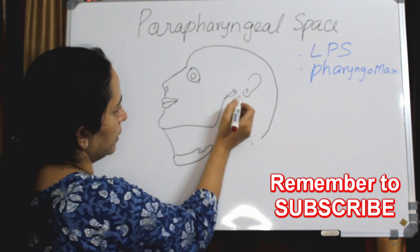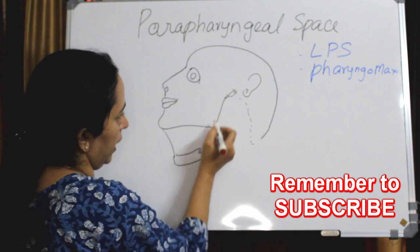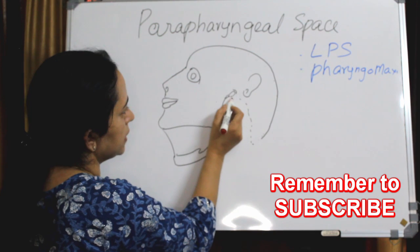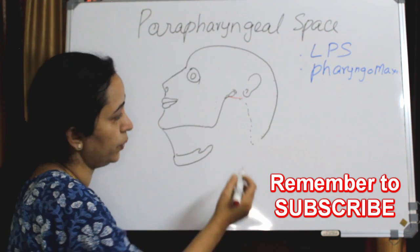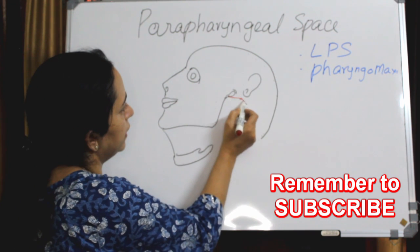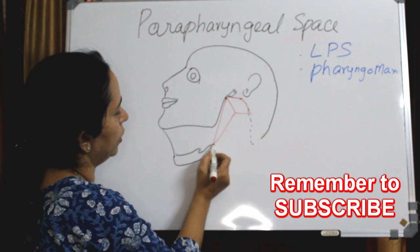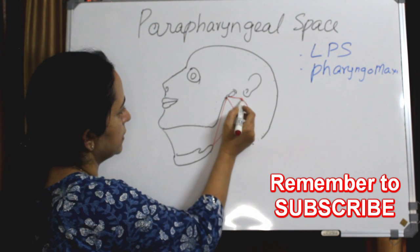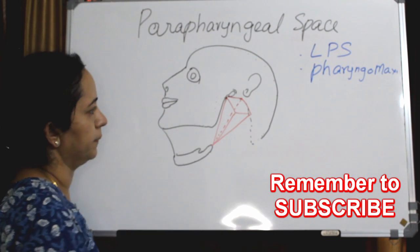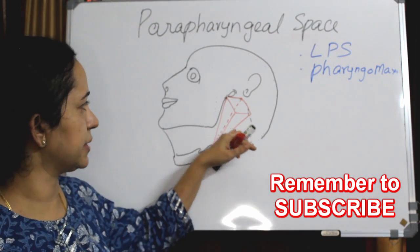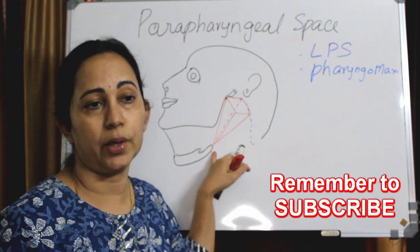The parapharyngeal space is an inverted pyramid with the base superiorly at the skull base — here is the skull base, here is the mandible, the angle of mandible — and the apex inferiorly directed toward the greater horn of the hyoid bone. The pyramid has a base, an apex, and four sides.